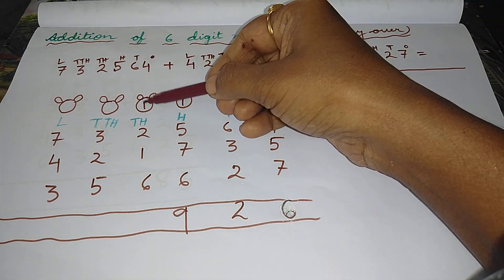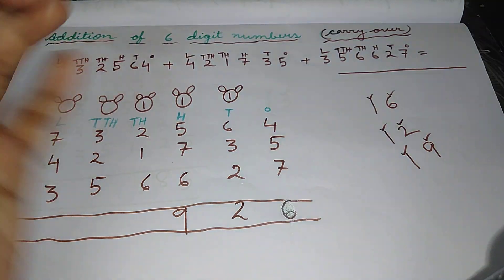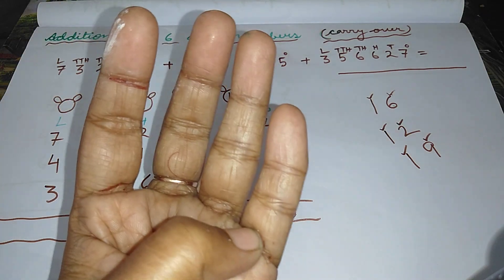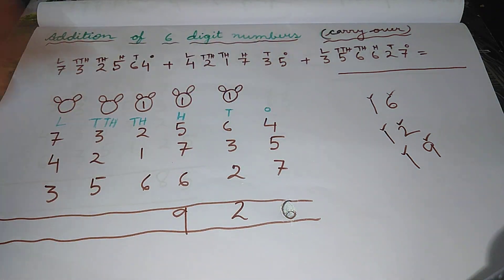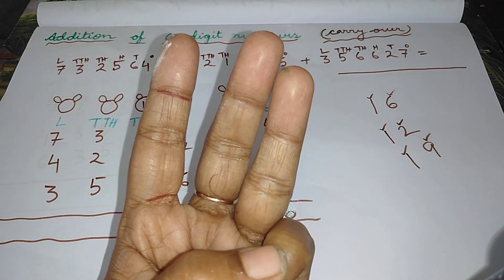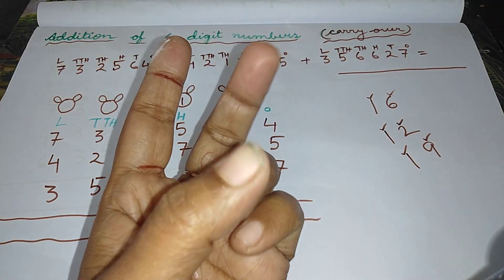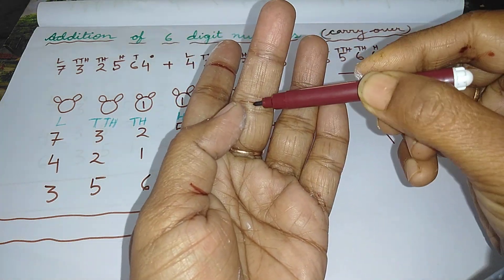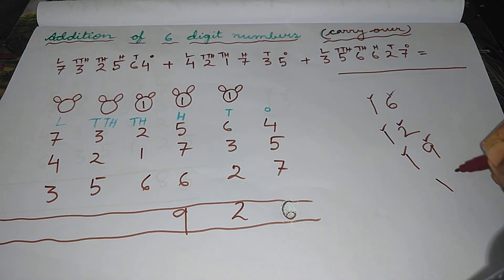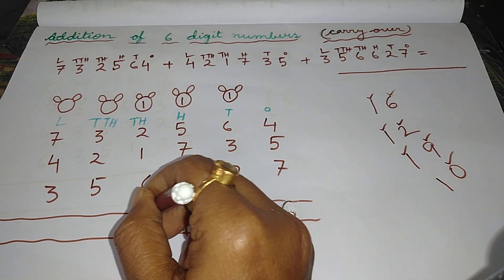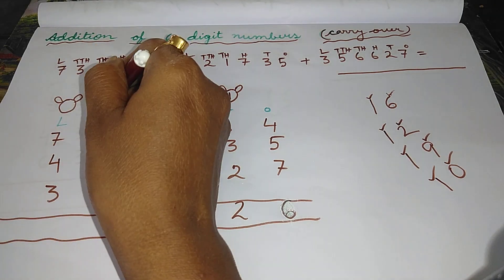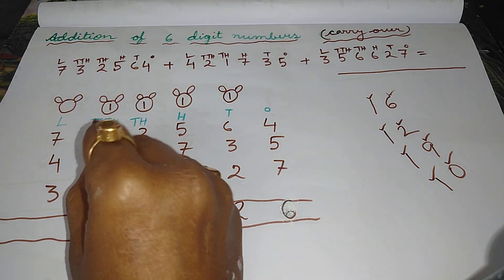Now add all these digits. The first digit is one, count one. The second is two, count two more. Then one, count one more. Then six, count six more — giving a total of ten lines. Write the last digit in thousand's column and carry the first digit, that is one, into the next column, that is the ten-thousands column.